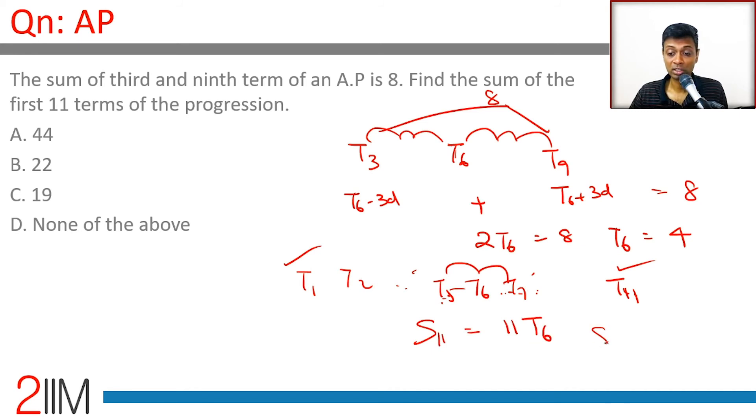Sixth term is 4. Sum of 11 terms is 4 into 11, which is 44.